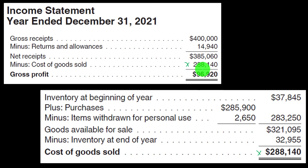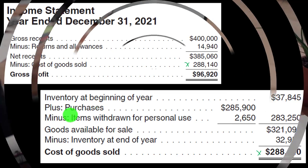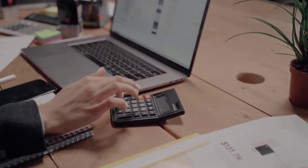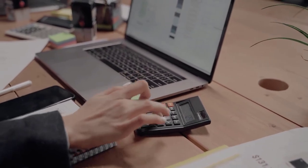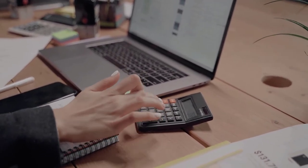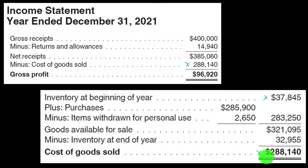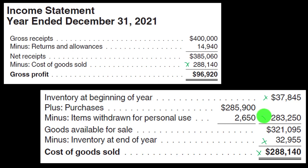If you're using accounting software with a perpetual accounting system, this may already be calculated for you. You might have to back into the cost of goods sold calculation: starting with beginning inventory from the prior year, cost of goods sold from your software, and ending inventory from the balance sheet — then solving for purchases as the unknown variable.